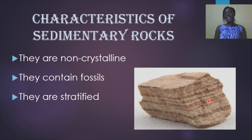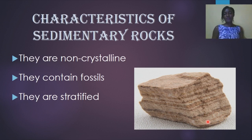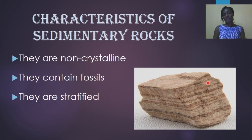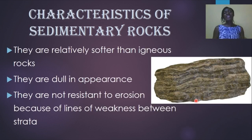Now we look at the characteristics of sedimentary rocks. As you can see from the image, they contain fossils and they are stratified — because over the years dead and decaying organic matter keeps piling up, one layer on top of another. You can see the strata, which are the lines formed over the years. These lines are characteristic of sedimentary rocks. They are also non-crystalline, unlike igneous rocks, and they are relatively softer than igneous rocks because of how they are formed.